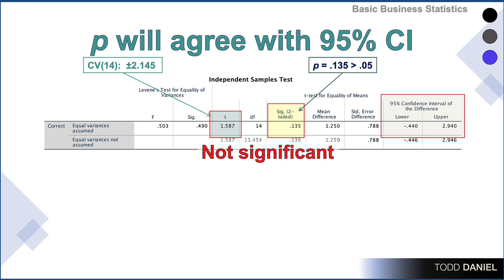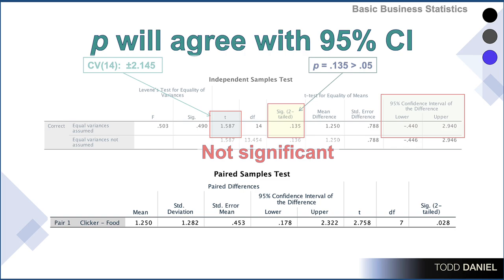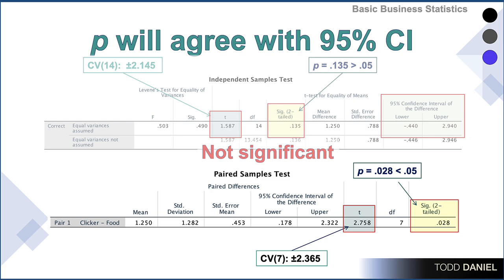Here is some output from SPSS for a repeated measures test. The critical value is positive or negative 2.365, but the t-test value is 2.8 — that exceeds the critical value. The p-value is 0.028, or 2 cents, less than a nickel, p less than 0.05. Both the lower and upper limits of the 95% confidence interval around the mean difference are positive — they do not cross zero. So the test value is in the critical region, p is less than 0.05, the confidence interval excludes zero — your ex is excluded and you can come to the party. This test is statistically significant.